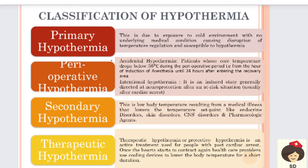Coming to classification. Hypothermia is classified as primary hypothermia - when a person is exposed to a cold environment without any medical illness, and the body is not able to regulate temperature, we call it primary hypothermia. Next is perioperative hypothermia, classified as accidental and intentional hypothermia. Accidental hypothermia is when, from the induction of anesthesia until 24 hours after the patient is shifted to the recovery area, the patient's temperature drops below 36 degrees Celsius.